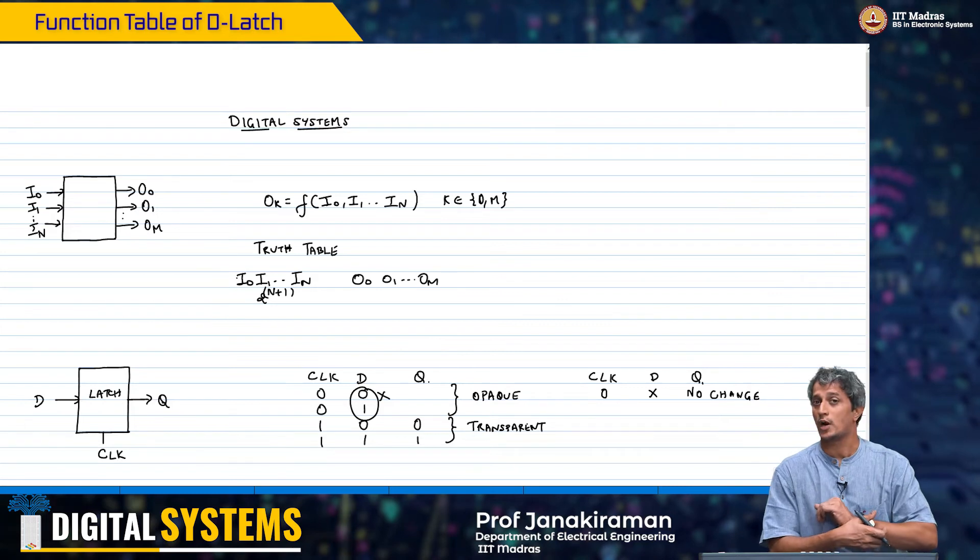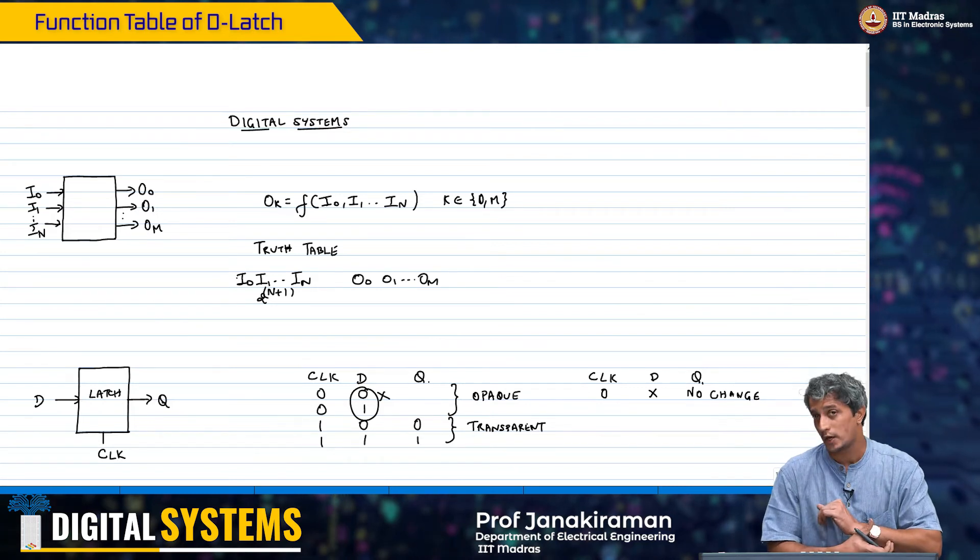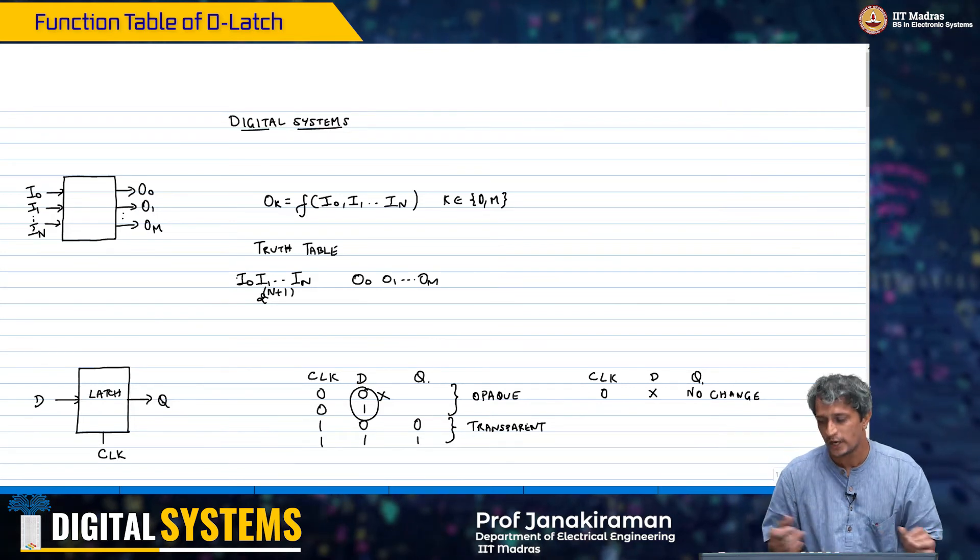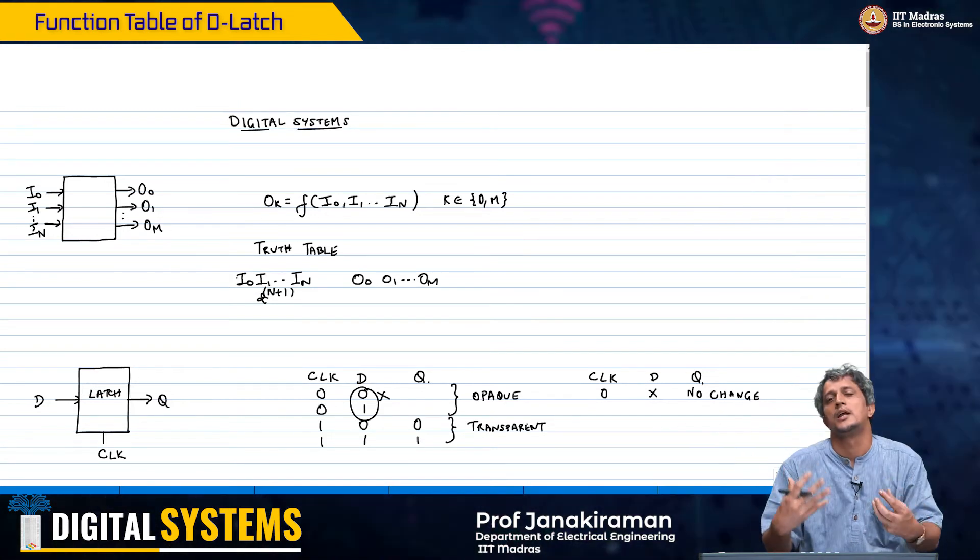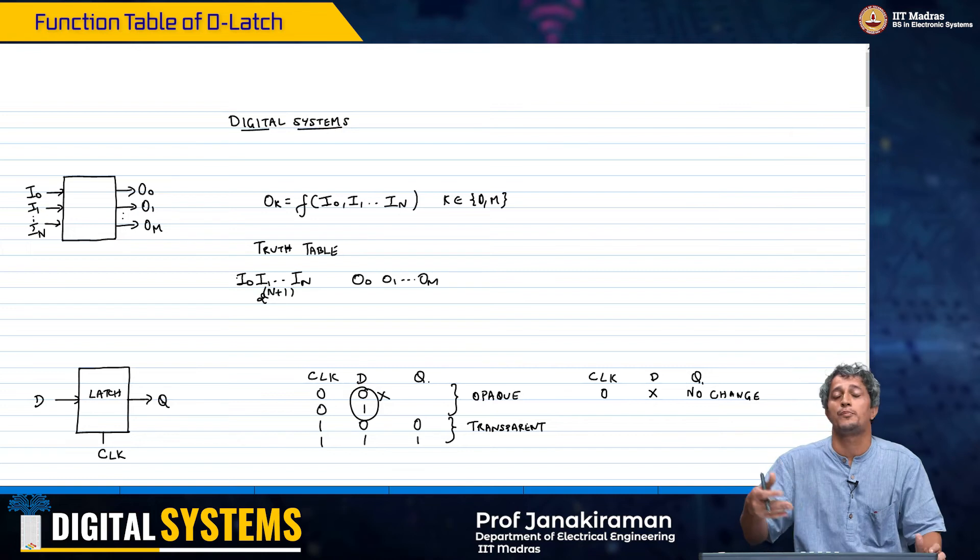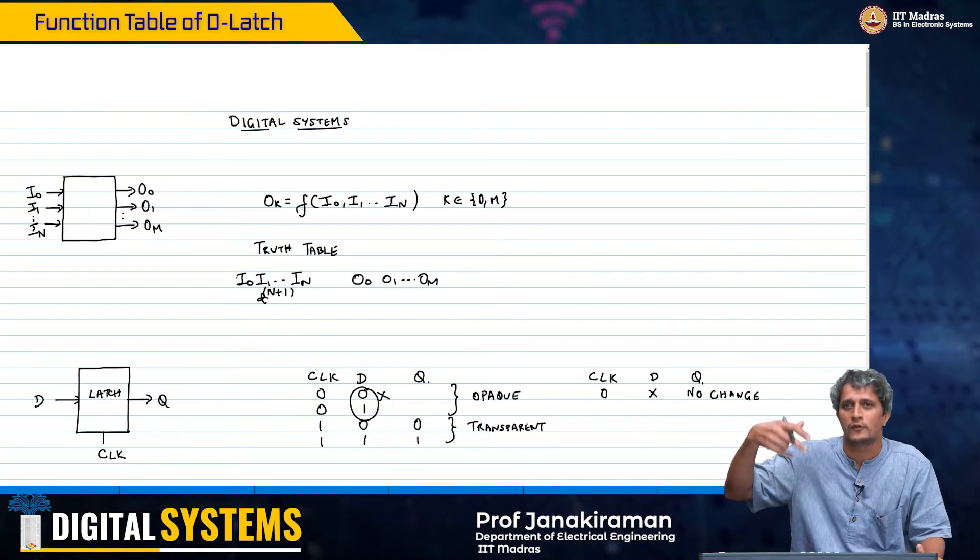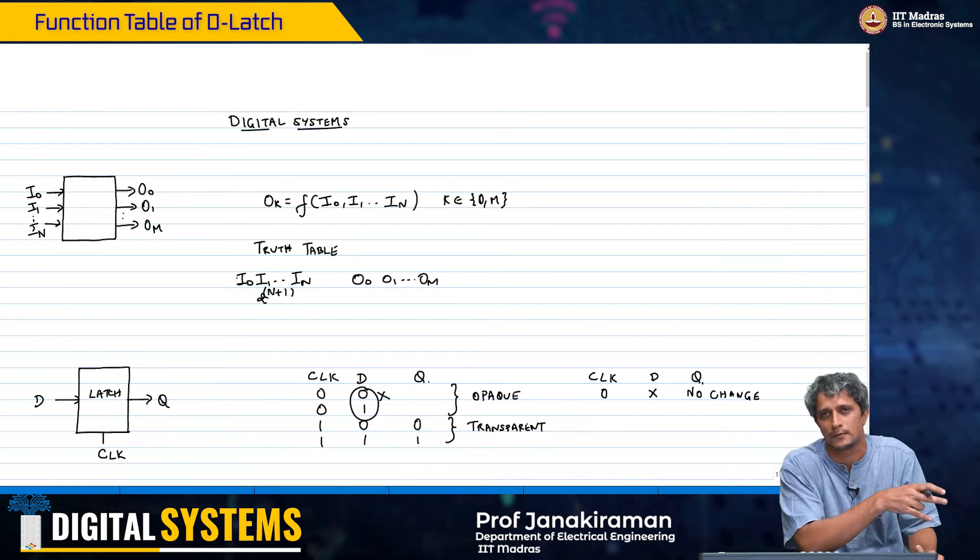If Q was 0, it will continue to be 0. If Q was 1, it will continue to be 1. So in some sense, the output of the latch is not even dependent on the input, it is dependent on itself at the previous state.